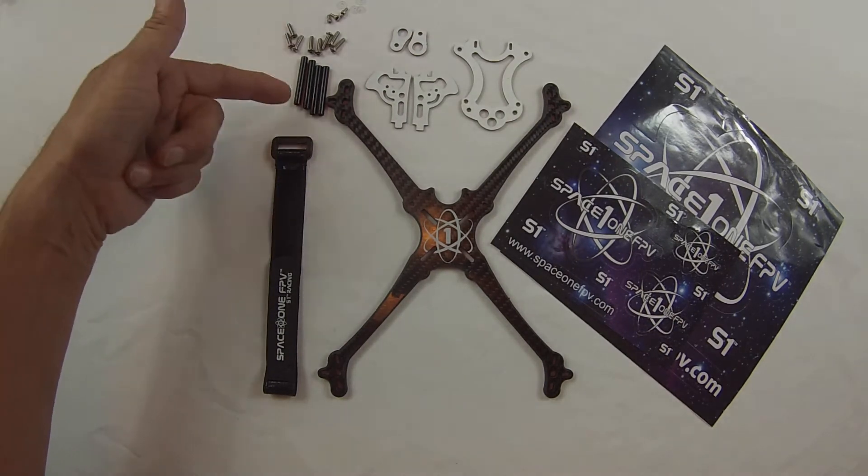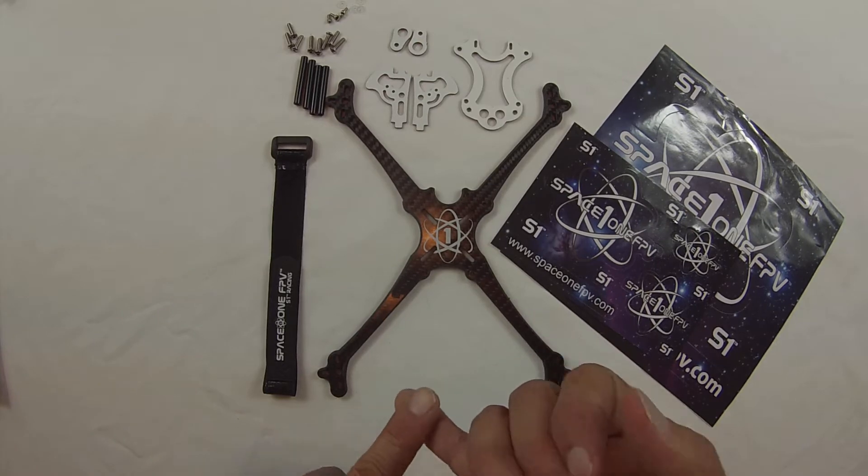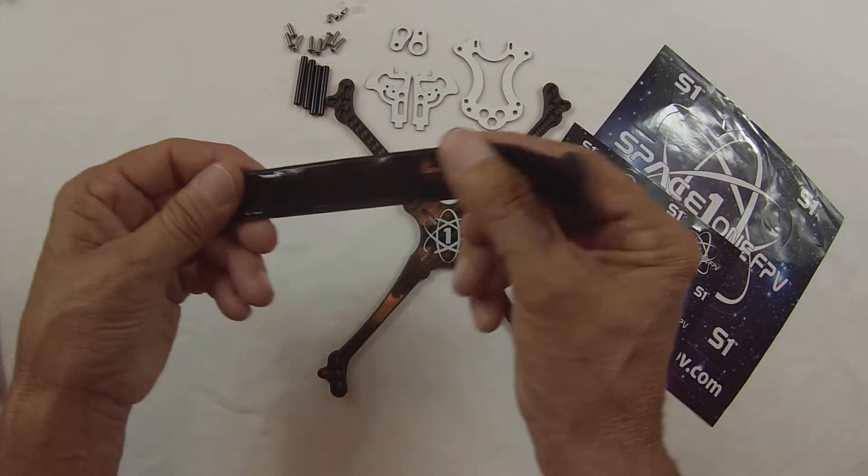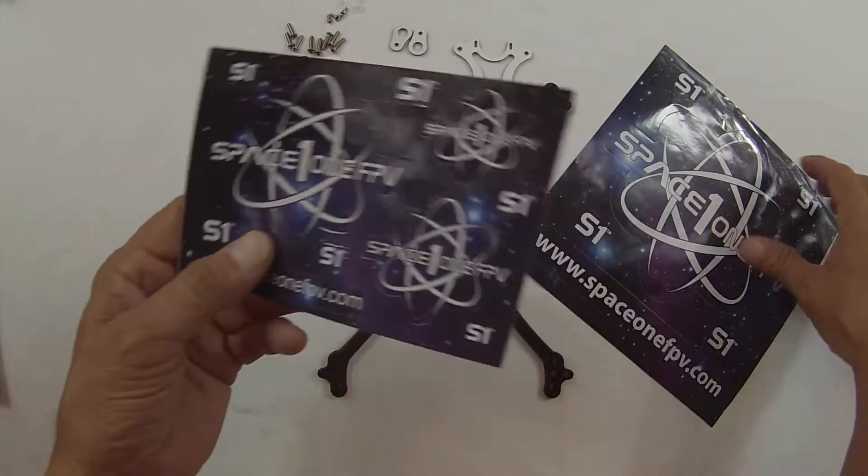8 screws, 4 standoffs and hardware for your Runcam Micro or your Runcam Mini. And battery strap with rubber backing to prevent your battery from slipping. Some pretty cool decals.